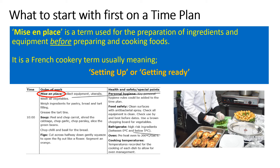The first thing you should always start with in a time plan is the mise en place. This basically means just setting up, getting ready. At the beginning — at 10:00 when they started this time plan — they've got mise en place: washing vegetables, weighing out ingredients, getting tins ready, lining tins, peeling and chopping vegetables. For health and safety and special points: is the fridge on, is the oven on, is everything sprayed down with bacterial spray to eliminate bacteria and potential cross-contamination?